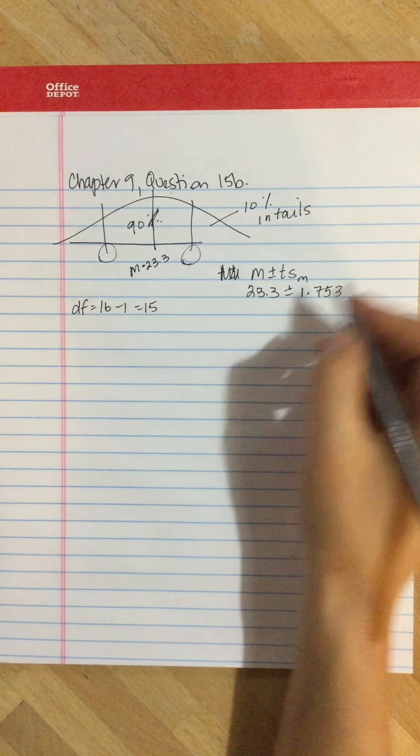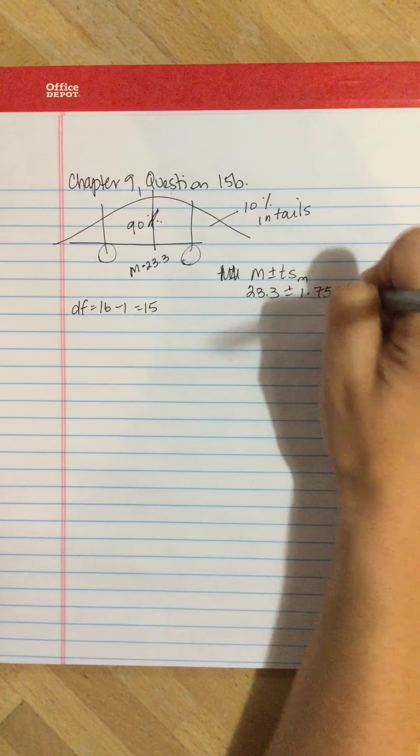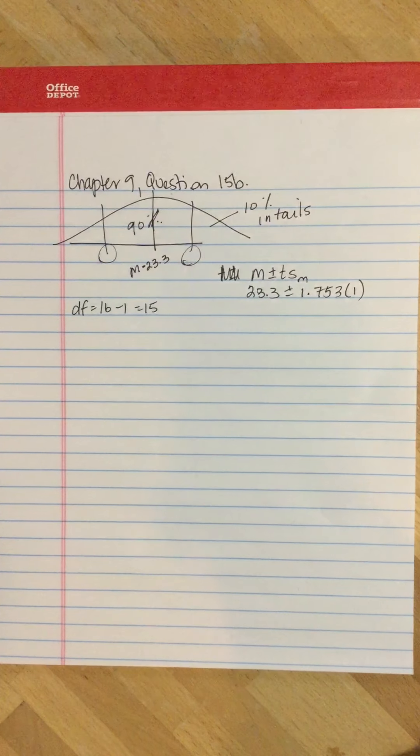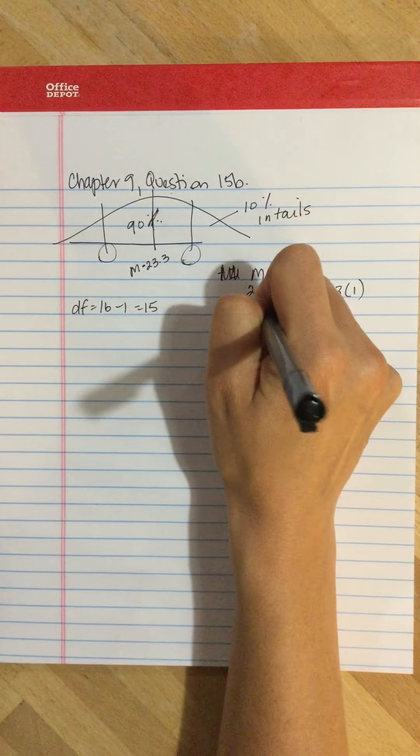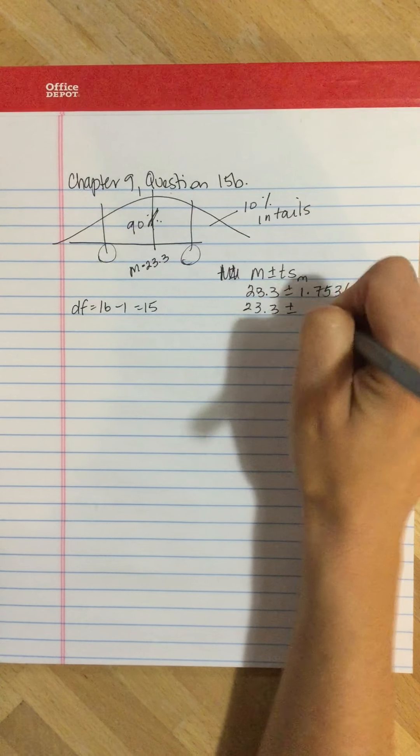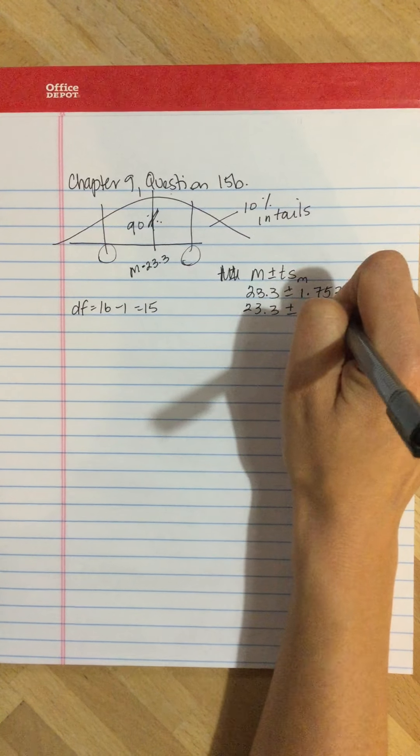We're going to multiply it by the estimated standard error, which we calculated in part 1, and that was 1.353. So we have 23.3 plus or minus 1.753.